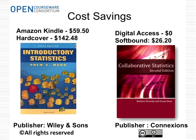One of the big advantages to open educational resources, which brings many of us in education to them initially, is the cost savings. Here we have an example of an introductory statistics book — our math 10 course in California. If the student has to purchase it on Amazon, the hardcover book is $142 and a Kindle version is $59. The openly licensed one — Collaborative Statistics — published by the Connexions OER repository with a Creative Commons attribution license, is available free online or as a downloadable PDF, and students can order a soft-bound copy for $26. Big cost savings for students.